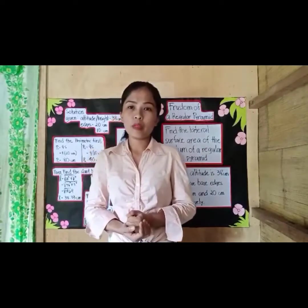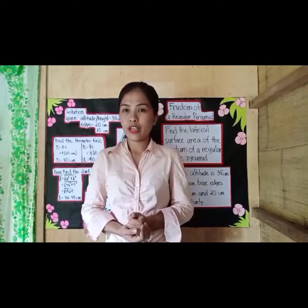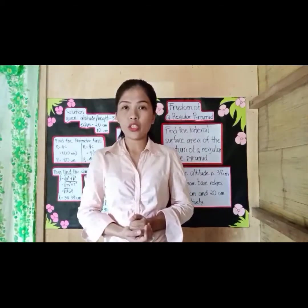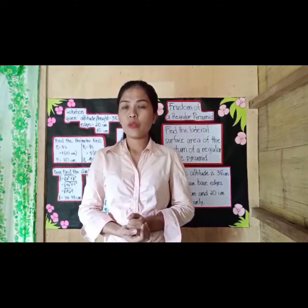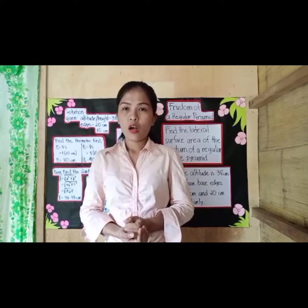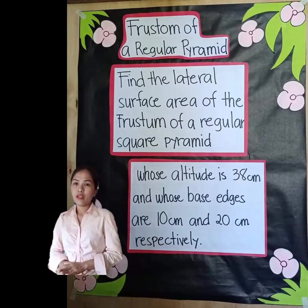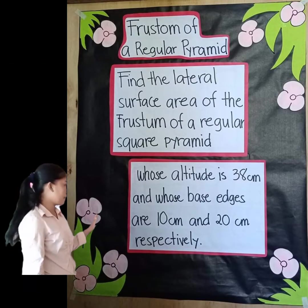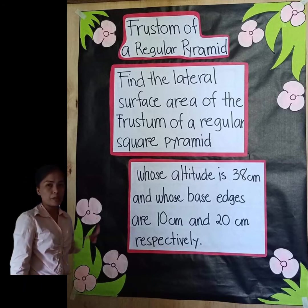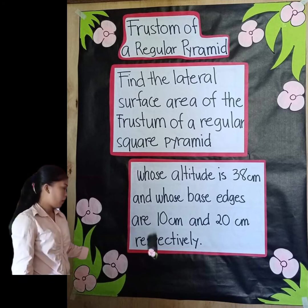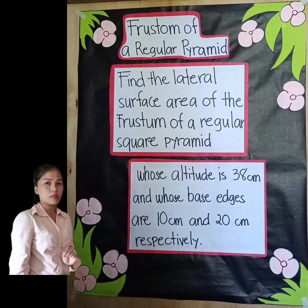Since my group mates have explained how to find the lateral area, total surface area, and volume of the frustum of any regular pyramid, I will now give an example on how to find the lateral surface area of the frustum of a regular square pyramid. Problem: Find the lateral surface area of the frustum of a regular square pyramid whose altitude is 38 cm and whose base edges are 10 cm and 20 cm respectively.